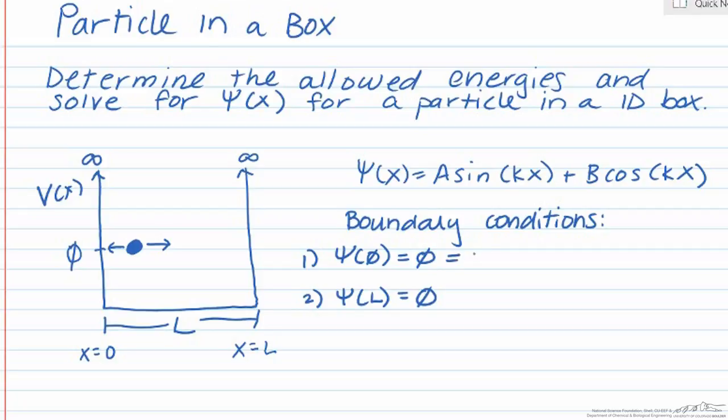Now if we substitute in 0 for our first boundary condition, we find that psi of 0 is equal to a sine k0 plus b cosine k0. And the sine of 0 is going to be equal to 0, but the cosine of 0 is going to be equal to 1. So the only way that this expression is going to be equal to 0 is if b is equal to 0.